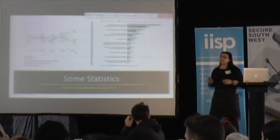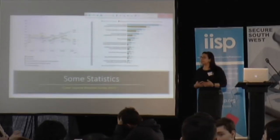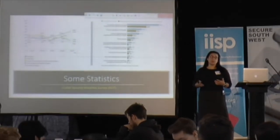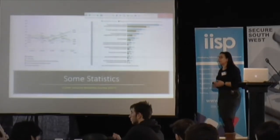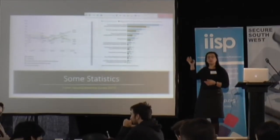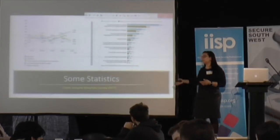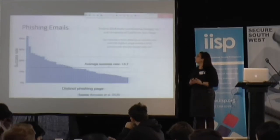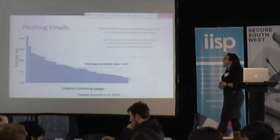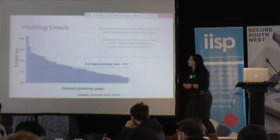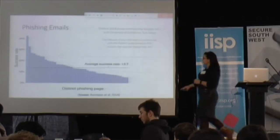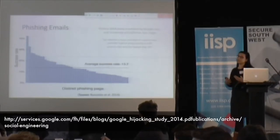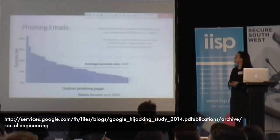Social engineering is happening more and more nowadays. It is becoming an issue for home users, for teenagers — which is becoming a quite important aspect, even for government regulations and curriculum — but also at the organisation level and how it's affecting employees. Phishing emails especially are one of the most common ways people try to target individuals. There is a success rate of 13.7%, and you can find a report on the source website about how phishing emails are changing and how they target individuals.